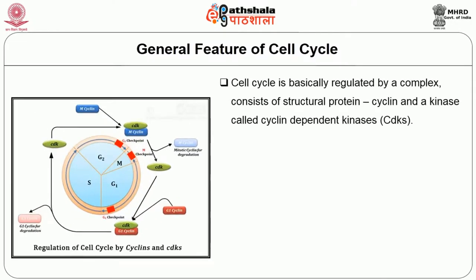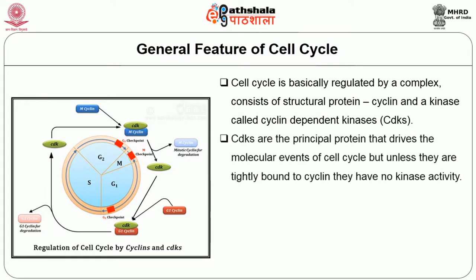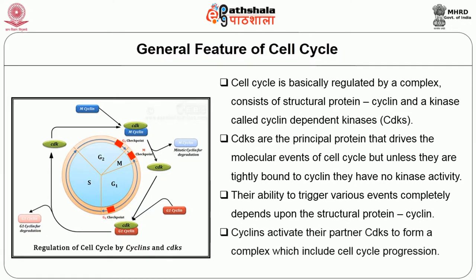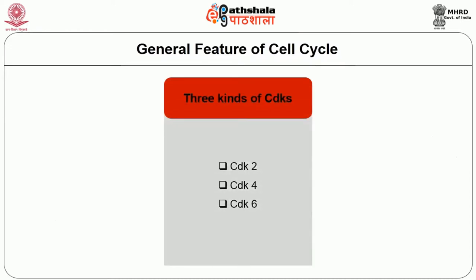The cell cycle is regulated by a complex consisting of structural proteins called cyclins and kinases called cyclin-dependent kinases (CDKs). CDKs are the principal proteins that drive the molecular events of the cell cycle, but unless they are tightly bound to cyclin, they have no kinase activity. Their ability to trigger various events completely depends upon the structural protein cyclin. Cyclins activate their partner CDK to form a complex which induces cell cycle progression. There are three kinds of CDKs noted: CDK2, CDK4 and CDK6.